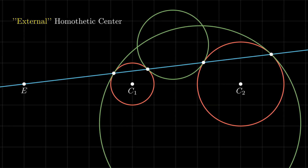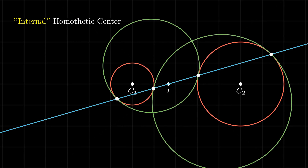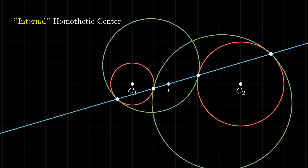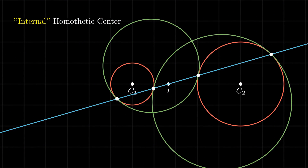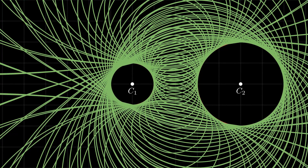Even though we have an infinite number of mutually tangent circles, this is just half the story. For the same pair of circles, we can also draw a pair of straight lines internally tangent to both circles. The intersection of these two tangents, called the internal homothetic center, acts as a point of scaling that both scales and flips one circle onto the other. Any line through the internal homothetic center intersects the given circles at points which define a new pair of circles tangent to both, each externally tangent to exactly one circle and internally tangent to the other.